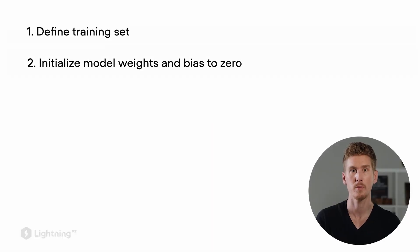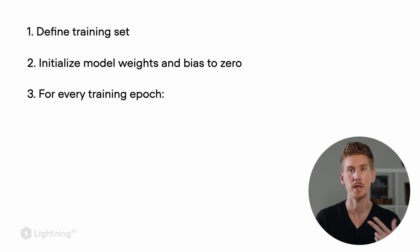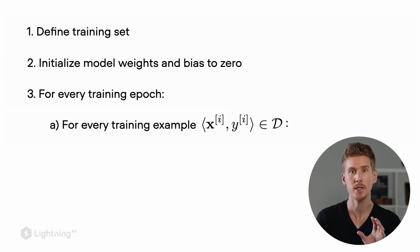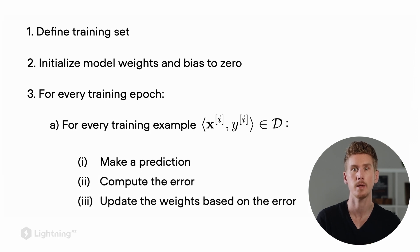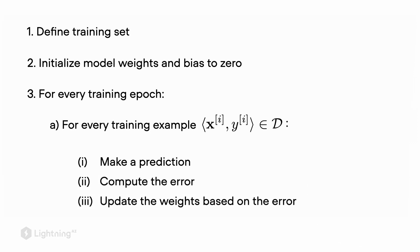In this video, we are going to take a look at the perceptron training one step at a time. In the previous video, we outlined the perceptron training procedure, which consists of a training dataset, the initialization of the model weights, and then the iteration over the training epochs, where for each training example, we make a prediction, compute the error, and update the weights and the bias unit. So how does that actually look like in practice? Let's take a look and do it step by step.